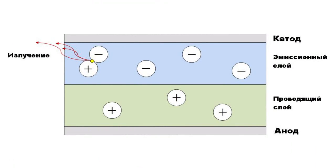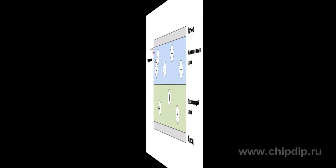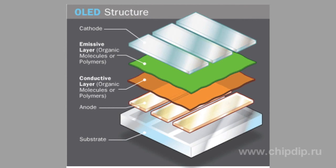OLEDs are made of special thin-film multilayer structures. These layers are special polymers. There is an anode and cathode, and electrons can flow between them. When positive voltage is applied to the anode, electrons from the cathode start moving towards it. The cathode emits them into the emissive layer, while the anode gets them from a conductive layer. As a result of the flow of charged particles, the layers acquire different charges.